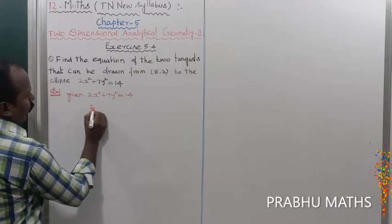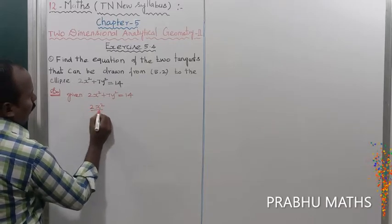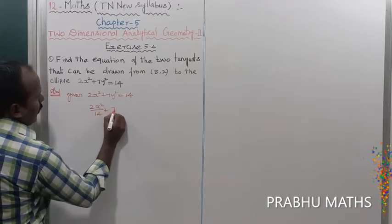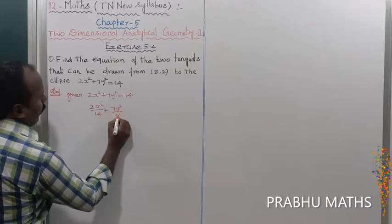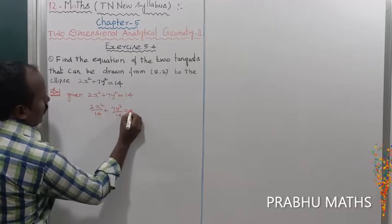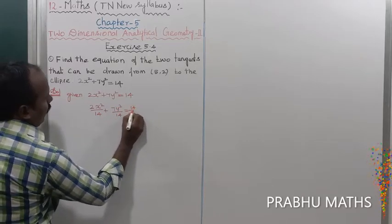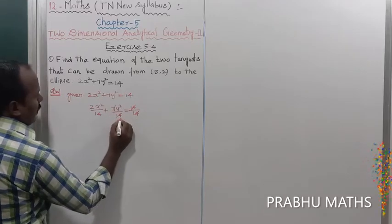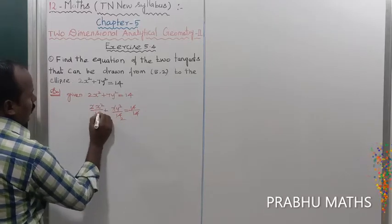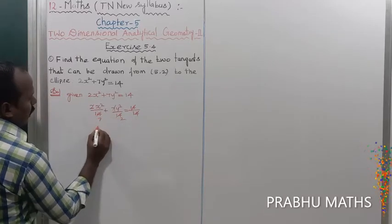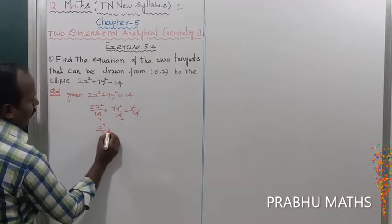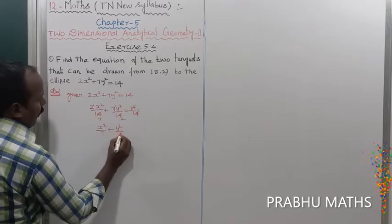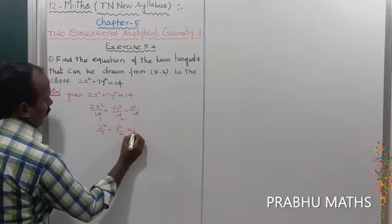Dividing throughout by 14: 2x²/14 + 7y²/14 = 14/14. After cancellation, we get x²/7 + y²/2 = 1. That is the standard form of the ellipse equation.